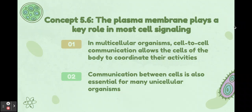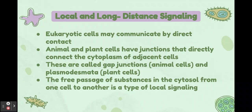Concept 5.6: the plasma membrane plays a key role in most cell signaling. In multicellular organisms, cell-to-cell communication allows the cells of the body to coordinate their activities. Communication between cells is also essential for many unicellular organisms.